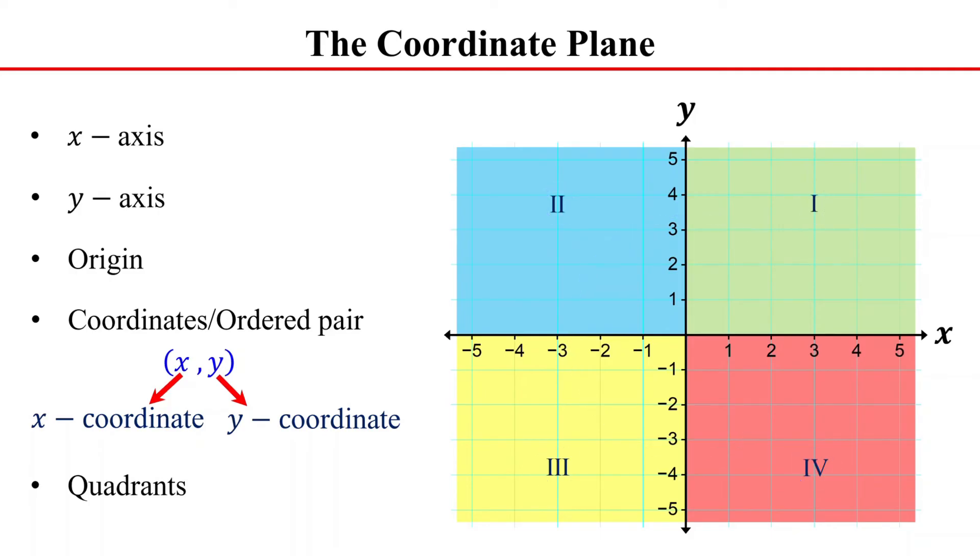Each quadrant has a distinct combination of positive and negative values for x and y-coordinates. In quadrant 1, both the x and y coordinates are positive. For example, the point 3 comma 2 is in this quadrant.